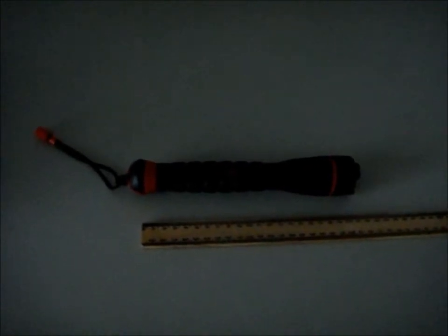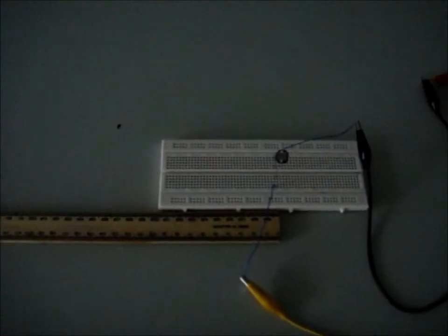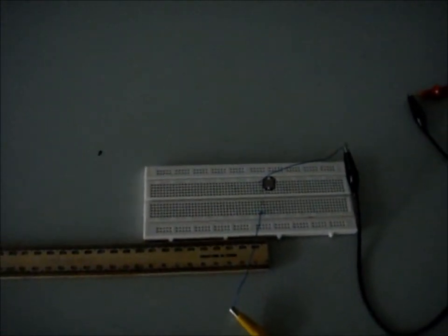The apparatus is set up under dark conditions to minimize the impact of external lighting on the photoconductor. It will be set up as such. The torch will be at one end of the meter ruler, and the breadboard and the photoconductor will be at the other end of the meter ruler. Note that the position of the photoconductor coincides with the zero mark on the meter ruler.